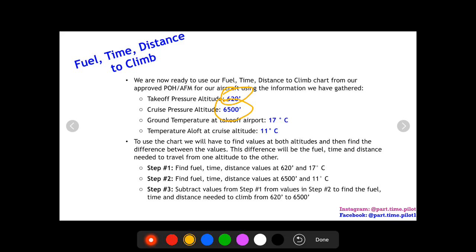All right, so now to do this, it's going to be in three steps to find the values of fuel, time, and distance to climb from when we take off to when we get to cruise. Step one is we find the fuel, time, distance to climb values at our takeoff elevation and takeoff temperature.